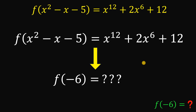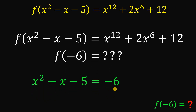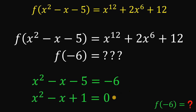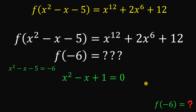To answer this kind of question, one way is to equate x squared minus x minus 5 to negative 6, then find the value of x, then replace that value into the right-hand side of the function. So we focus on this equation and add 6 on both sides to get x squared minus x plus 1 equals 0. Since this quadratic equation is not factorable, we will use the quadratic formula.